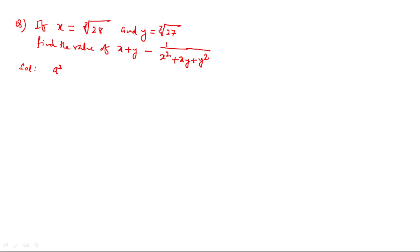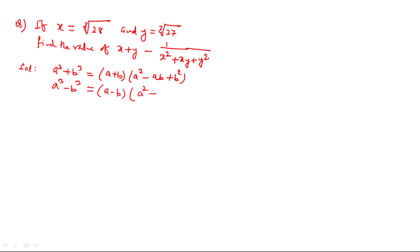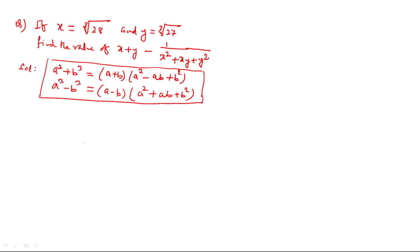The formulas we need to remember are: a cubed plus b cubed equals a plus b times a squared minus ab plus b squared, and a cubed minus b cubed. Whenever this cube root type of question comes, we must immediately involve these formulas and our solution will become easy.